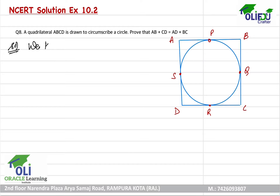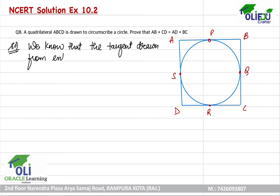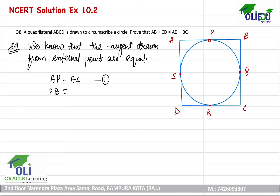We have to recall the theorem that the tangents drawn from an external point are equal. Using this theorem, we state that AP is equals to AS — that is the first equation. And PB is equals to BQ — that is the second equation.